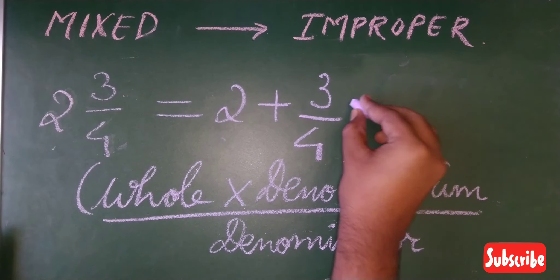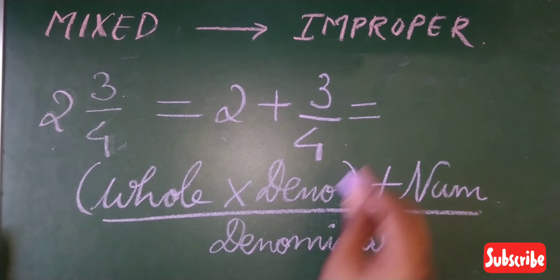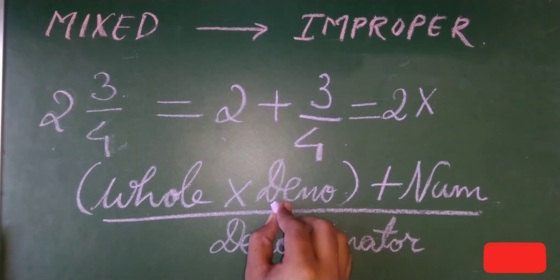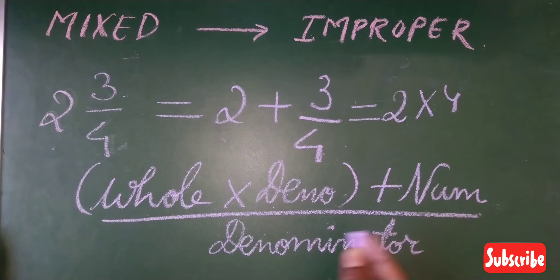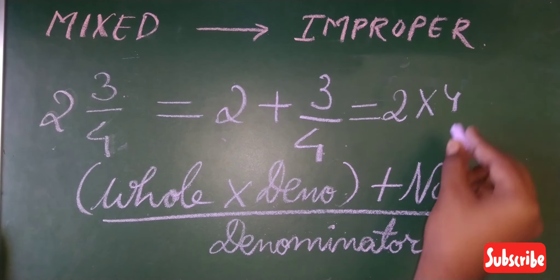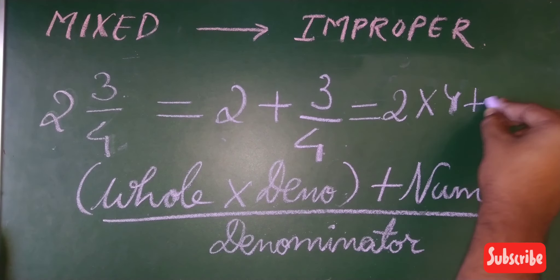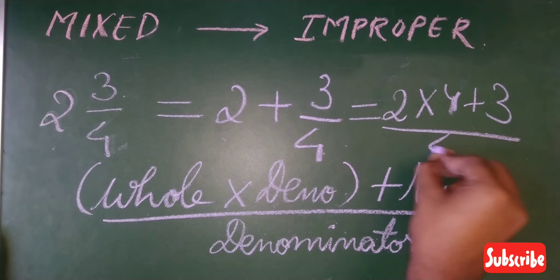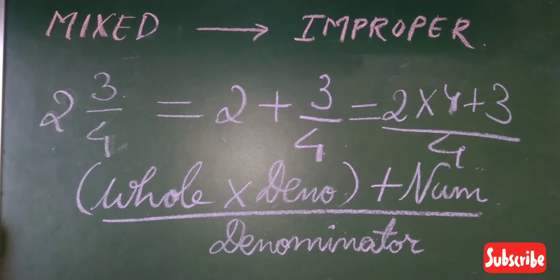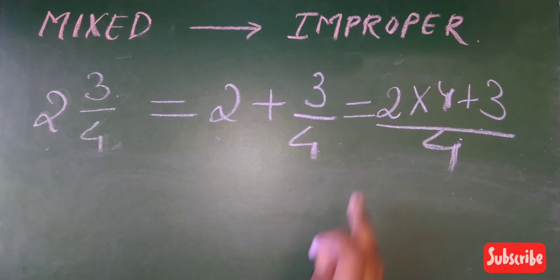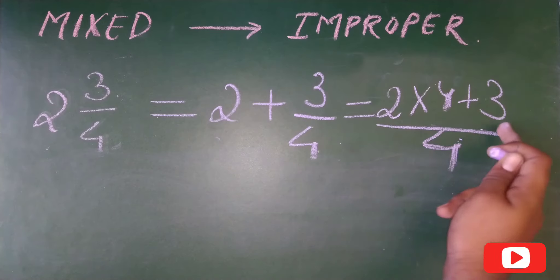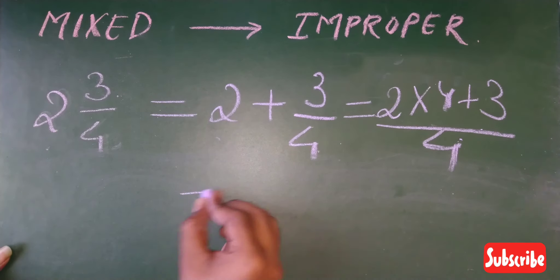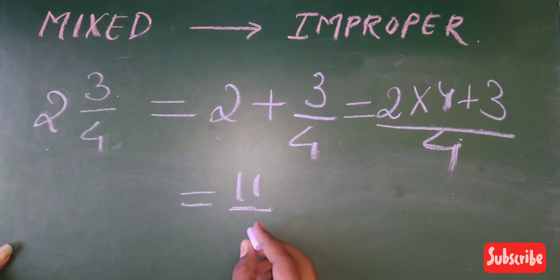Applying this to our example 2 and 3/4: whole number is 2, denominator is 4, numerator is 3. So it is (2 × 4 + 3) / 4 = (8 + 3) / 4 = 11/4. So the answer is 11/4.